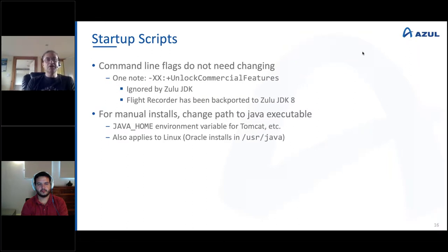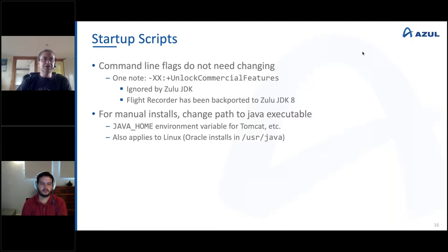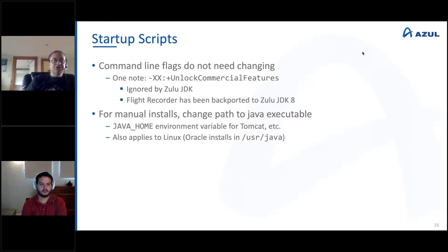Having installed the JVM, the only other thing you need to do is check whether you need to update environment variables to point at the new installation. From a command line flag perspective, there's nothing to worry about. We build from the same source code, so all flags supported on the Oracle JDK are supported on Zulu JDK, with one exception: Oracle has an unlock-commercial-features flag. Since we don't have commercial features in OpenJDK, we don't have that flag. Even if you had a script that used it, it will simply be ignored by Zulu JDK and won't prevent the system from starting up. The main environment variable to check is Java Home — if you're running something like Tomcat, you may need to change Java Home to point at the new installation directory.